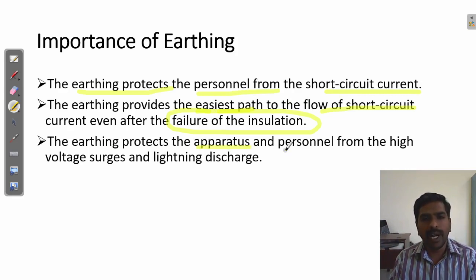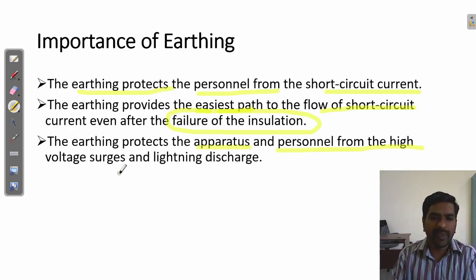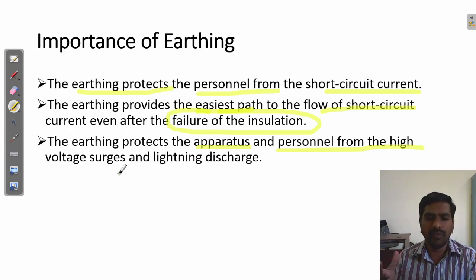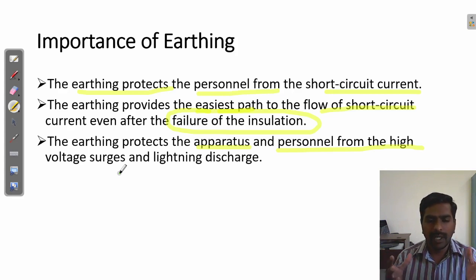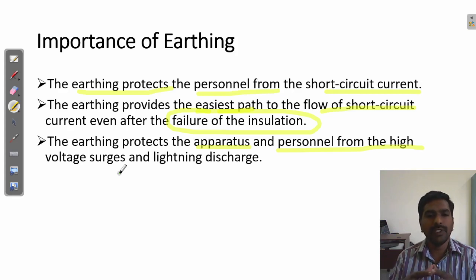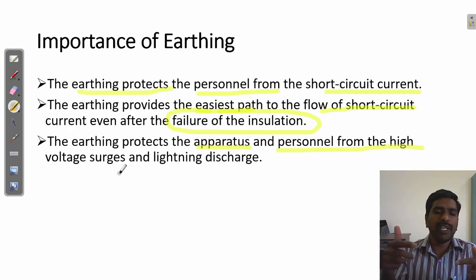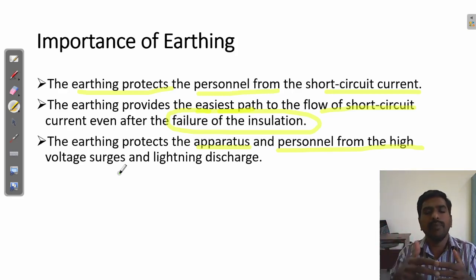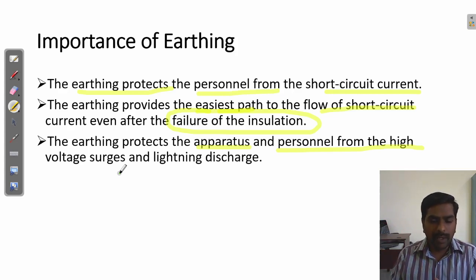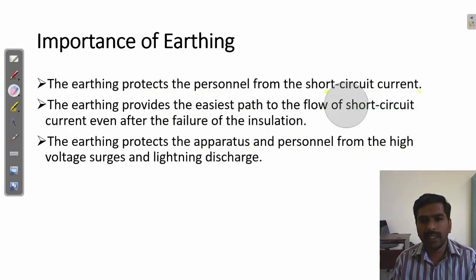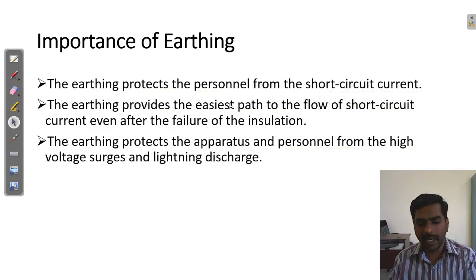Earthing protects the operators and personnel from high voltage and also protects equipment. The equipment can be damaged — when there is a short circuit, the equipment can be damaged. Today we have electric components costing more than one lakh, two lakh, three lakhs. For example, a high definition smart television costs one lakh — if that television gets high voltage and high current suddenly, the television gets damaged. To protect that, we need earthing. One is to protect the equipment and another is to protect human life from short circuit current or electric shock.